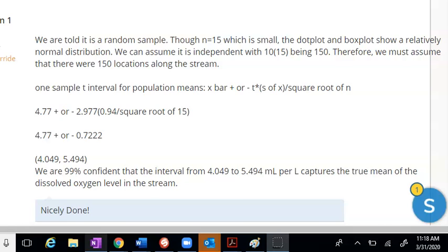The second point is obtained by identifying the interval you're using by name or by formula. And what you can see is this person says one sample T interval for population means, and she also provides the formula.